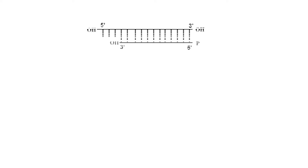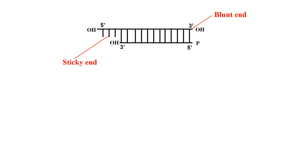First of all, we should know what are blunt ends and sticky ends. In this typical DNA molecule, you can clearly see that the right-hand side end is known as the blunt end. Because it does not have any unpaired base — the end which does not have any overhang or unpaired base pairs is known as a blunt end.